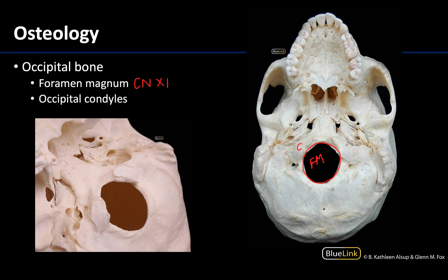Flanking the foramen magnum you are going to have your occipital condyles — you can see them in both the straight inferior view as well as this inferior lateral view, where you can appreciate their oblong, disc-like shape. These condyles are going to articulate or form a joint with the first cervical vertebra, often referred to as the atlas. The joint between the occipital bone and the atlas is called the atlanto-occipital joint — very aptly named — and this is basically how the skull meets the rest of the body.